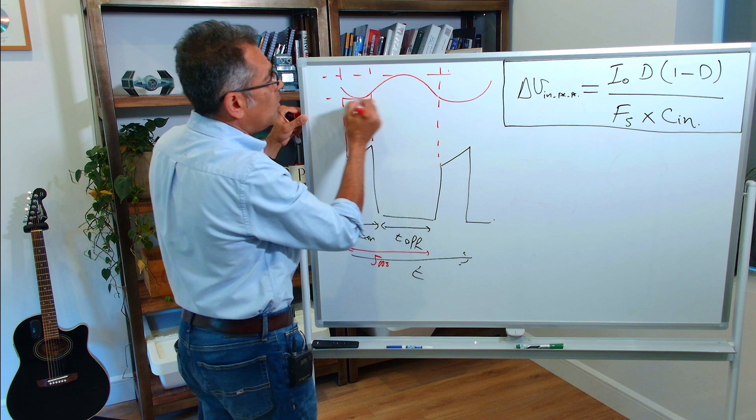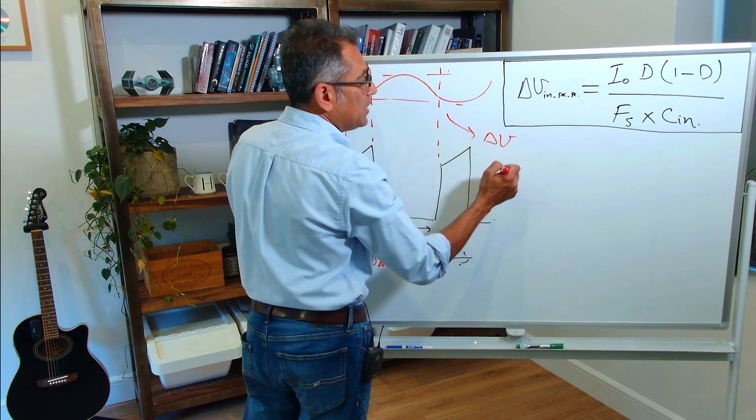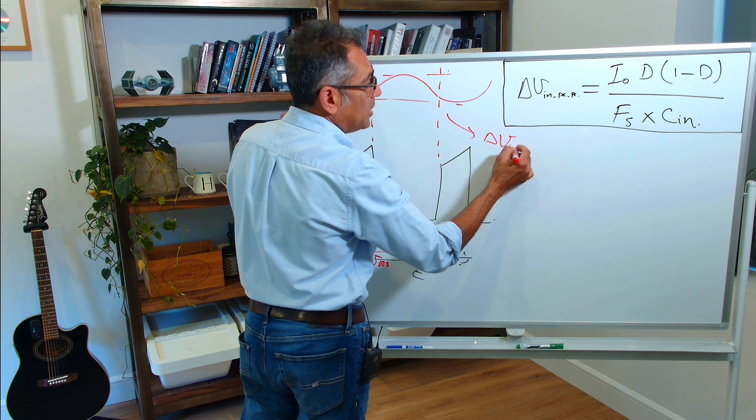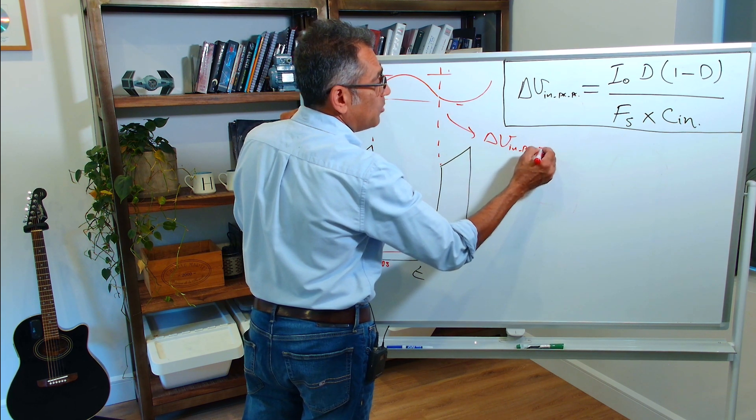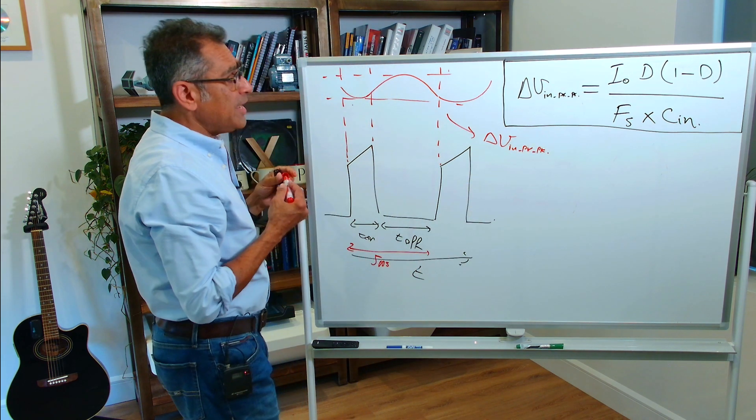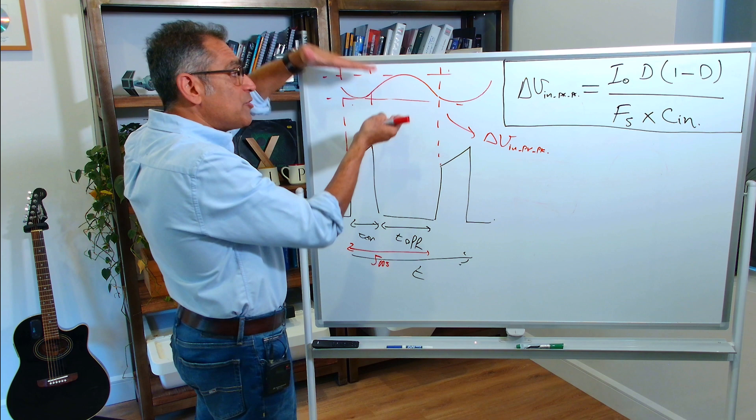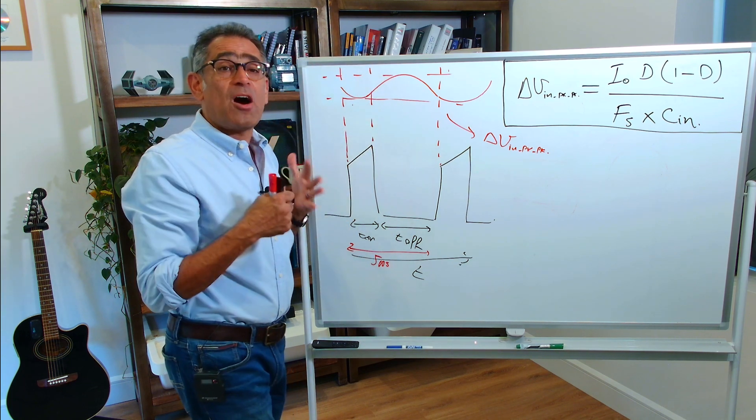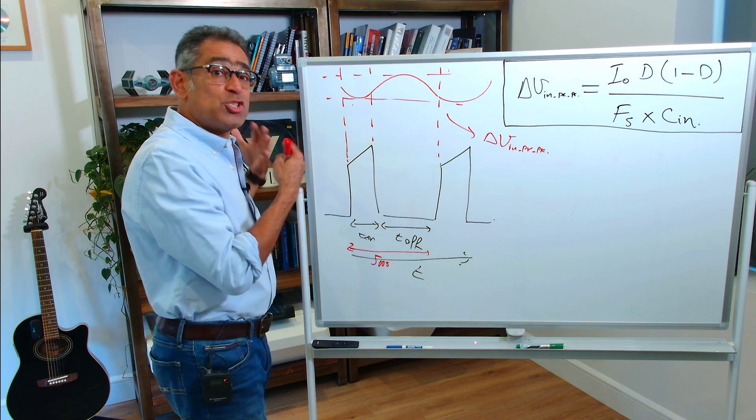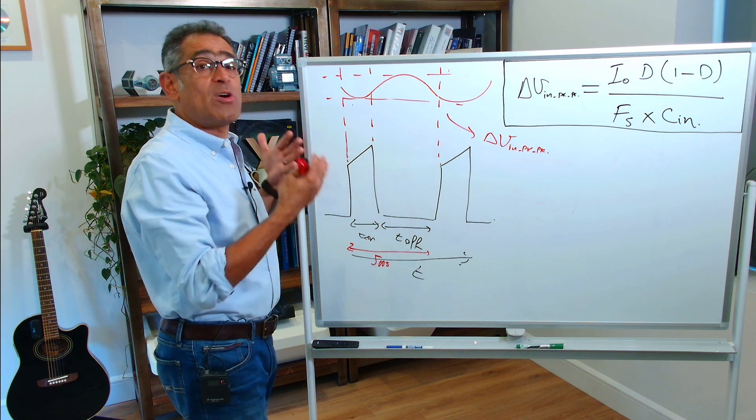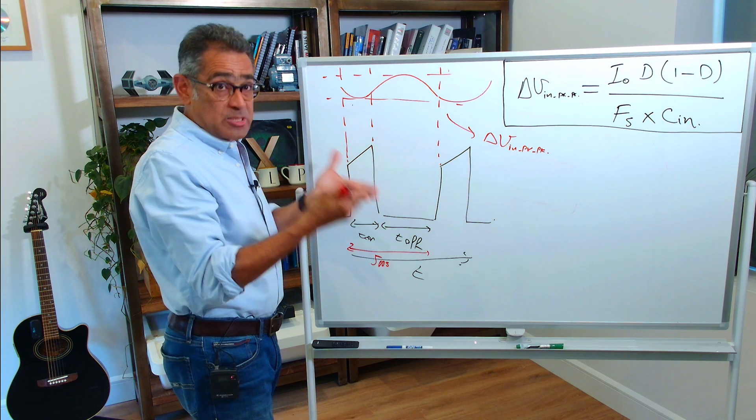And therefore, you end up with a ripple, which you're going to call delta V in peak to peak, my input ripple voltage peak to peak. I need to calculate the amount of my capacitors so that I reduce this to a certain level. It's a little bit hard to do because we usually do not know the impedance of our bench power supply or DC bus or whatever it is that is feeding the power supply that we're designing.